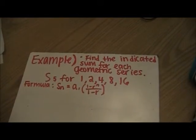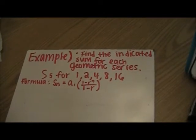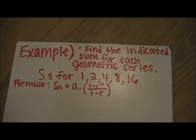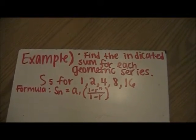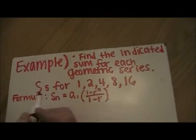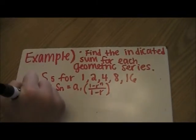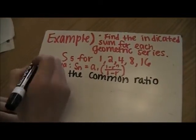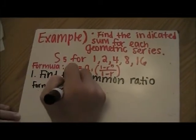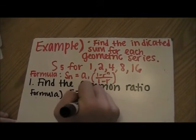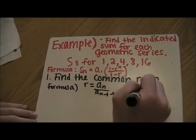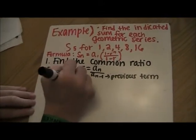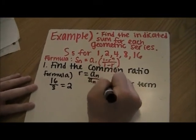An example of finding a geometric series: find the indicated sum for the geometric series. The problem is s sub 5 for 1, 2, 4, 8, and 16. The formula is s sub n equals a sub 1 times the quantity 1 minus r to the nth power divided by 1 minus r. The very first step is to find the common ratio: r equals a sub n divided by a sub n minus 1 — the previous term. So we use 16 divided by 8, which equals 2. Your ratio is 2.